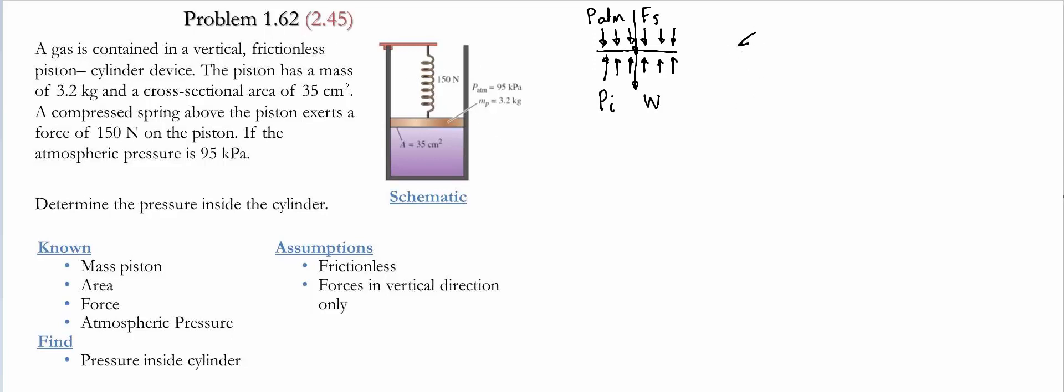We know that the summation of the forces in the y direction has to be equal to zero. Therefore, now let's add all the forces. Start with the distributed forces. We have atmospheric pressure. It's going down, therefore it's negative. And to make it into a force, we multiply it by the cross-sectional area. So it's minus P_atm times the cross-sectional area. We have the other distributed force, which is P_i, times the cross-sectional area. We got minus the force of the spring minus the weight. And that equals to zero.